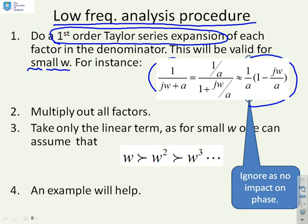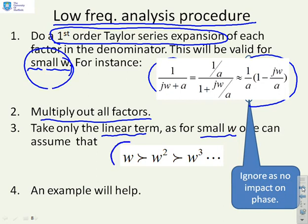What do you do next? You're going to multiply out all the factors in the system, and then we're only going to take the linear term, by which we mean the coefficient of omega, because what we can say is if omega is small, then omega is much bigger than omega squared, which is much bigger than omega cubed and so on. Now I'll do an example and after that it should be obvious.